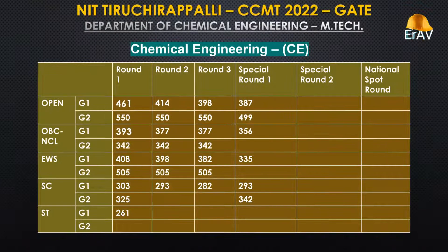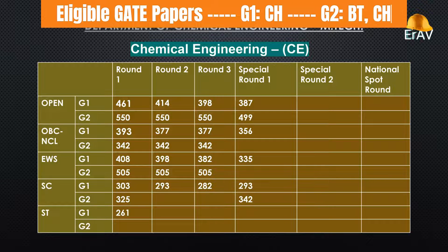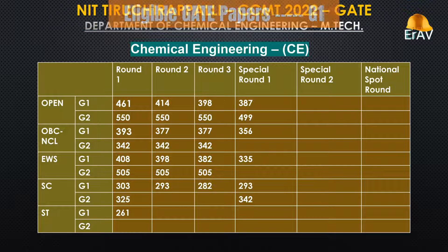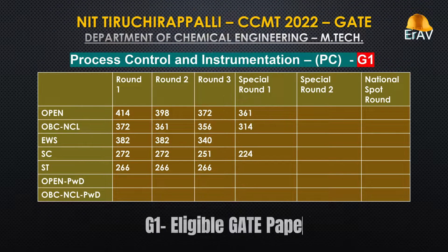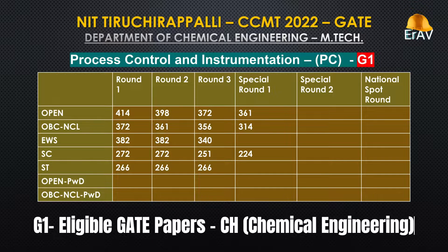Chemical Engineering department. Specialization: Process Control and Instrumentation. Group 1 — Eligible GATE Papers: Chemical Engineering (CH).